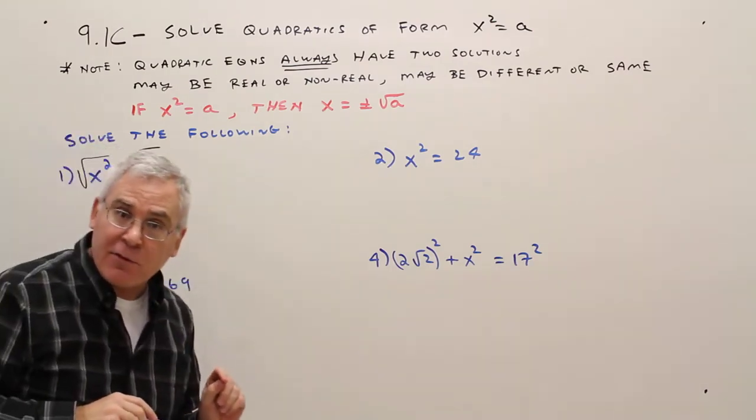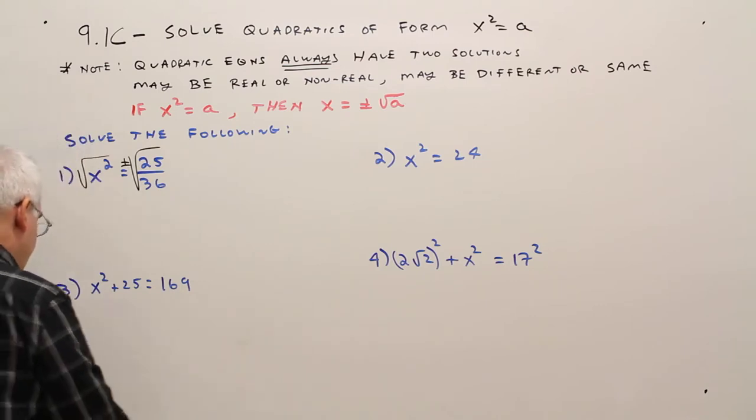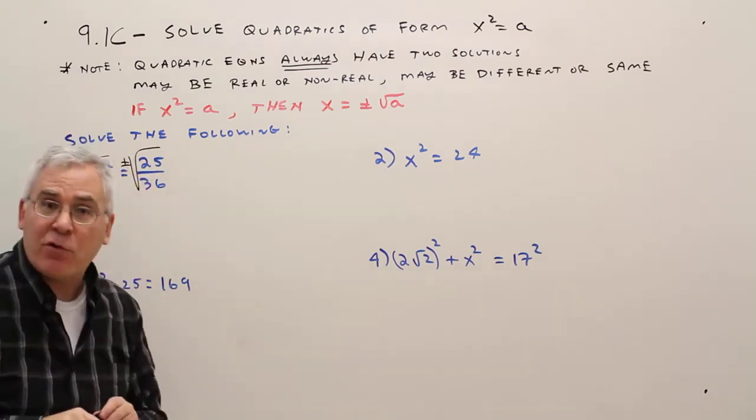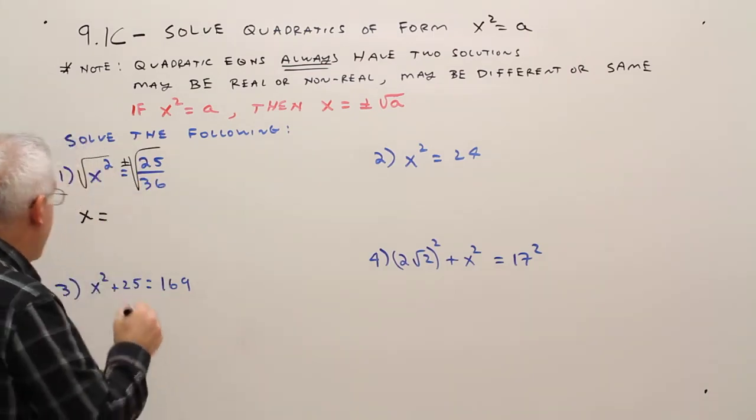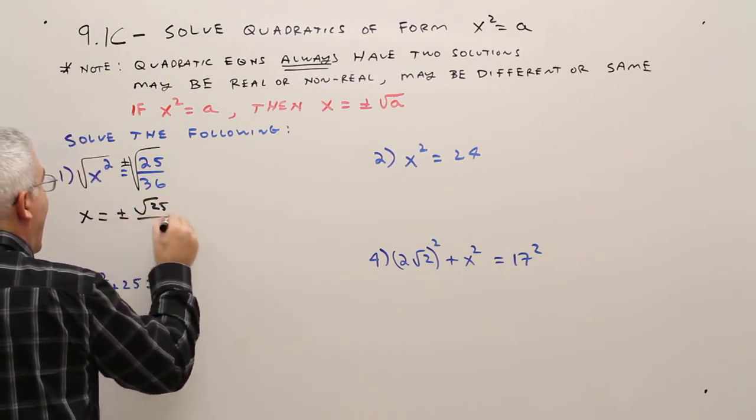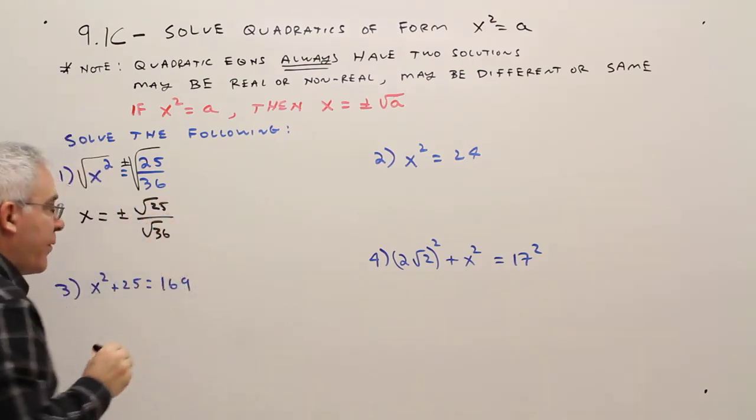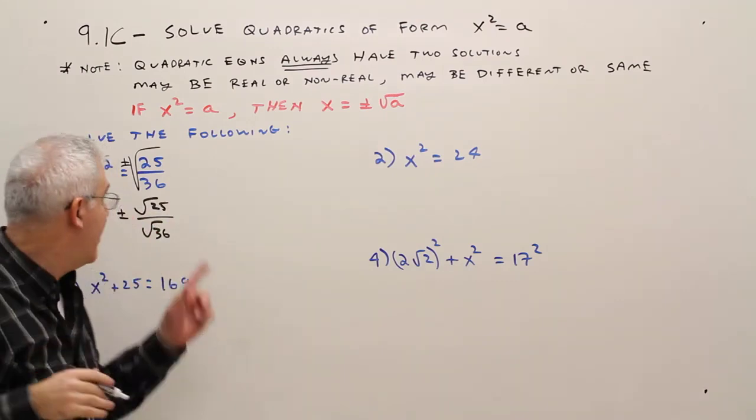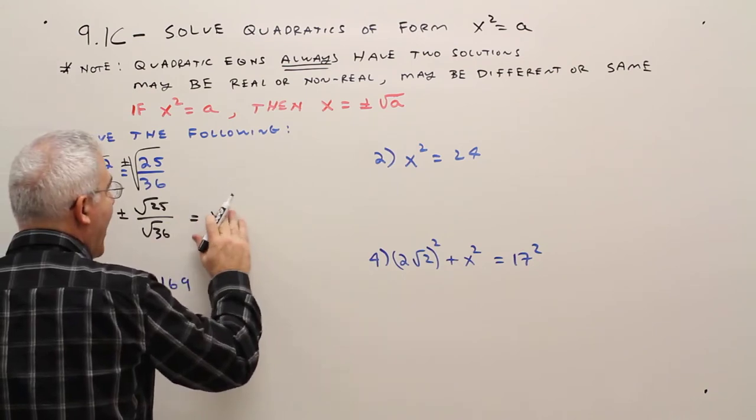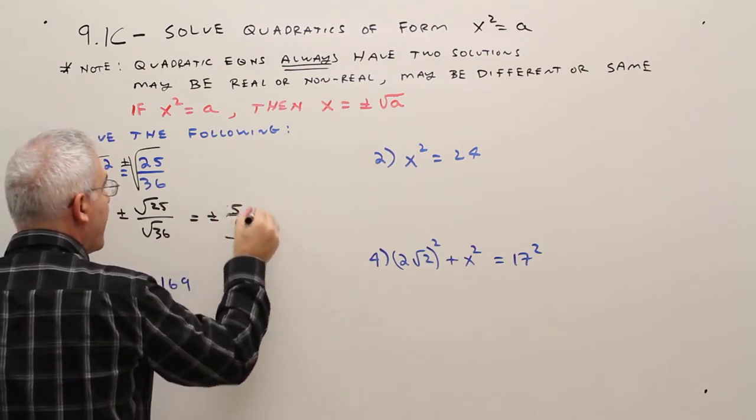Square rooting undoes squaring, so that'll result in X, and then I just gotta take plus or minus the square root of the right side. So it'll be plus or minus the square root of 25 over the square root of 36. I'm just separating them and that'll be plus or minus 5 over 6.